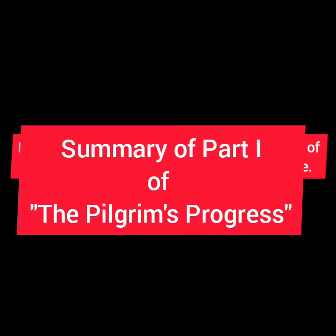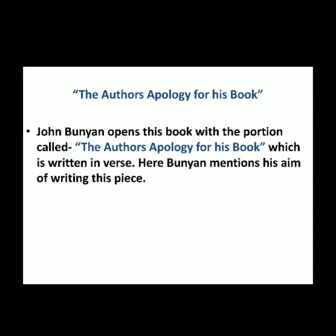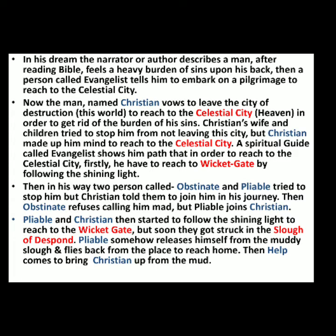Now let's start the summary of Part One, which was published in 1678. Part One is presented as a dream sequence in which the narrator dreams of the trials and adventures of an everyman figure named Christian. Christian first reads the Bible and understands the sins he has committed in his lifetime. He then wants to rid himself of the terrible burden of sin. A spiritual guide called Evangelist points him toward the Wicket Gate and tells him to leave the City of Destruction and reach the Celestial City in order to free himself from the burden of his sins.